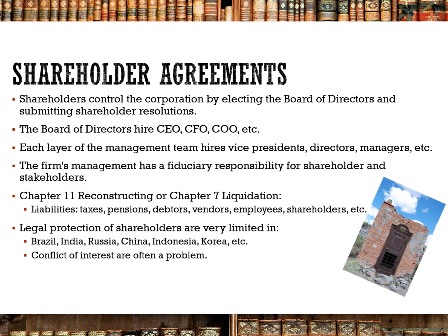To better understand how a business is managed and operated, it's important to understand the documents that control it. Shareholder agreements control items such as how to elect the board of directors to represent the shareholders, and how to submit a shareholder resolution. These are typically listed in the articles of incorporation, bylaws, and other policies. The shareholders elect the board of directors, who hire the CEO, CFO, COO, and so on, with each layer under the CEO hiring the next layer — the larger the organization, the more layers involved, which is why hiring can take so much time.